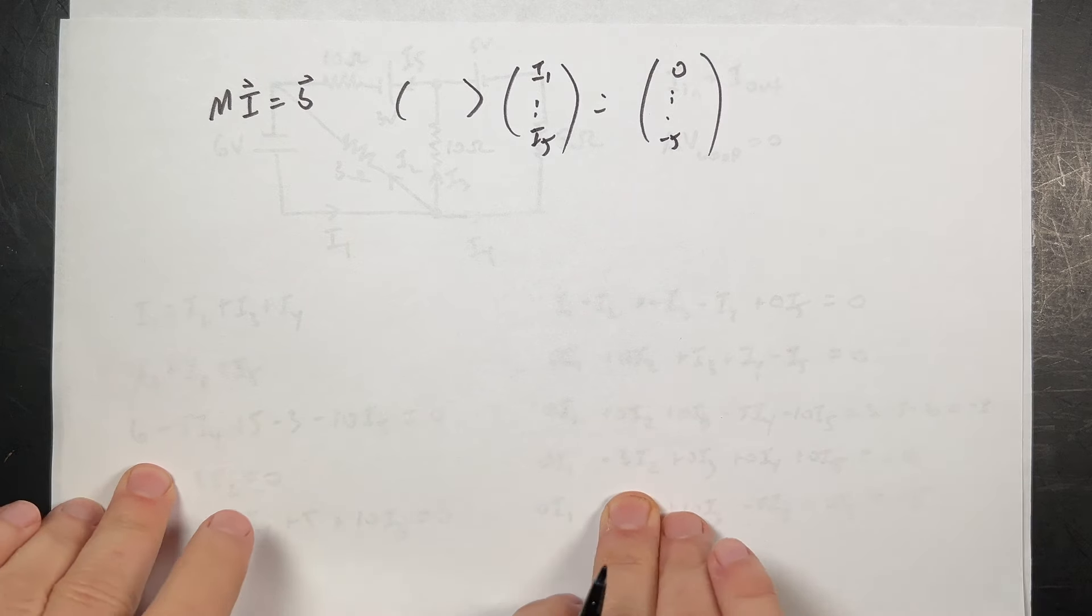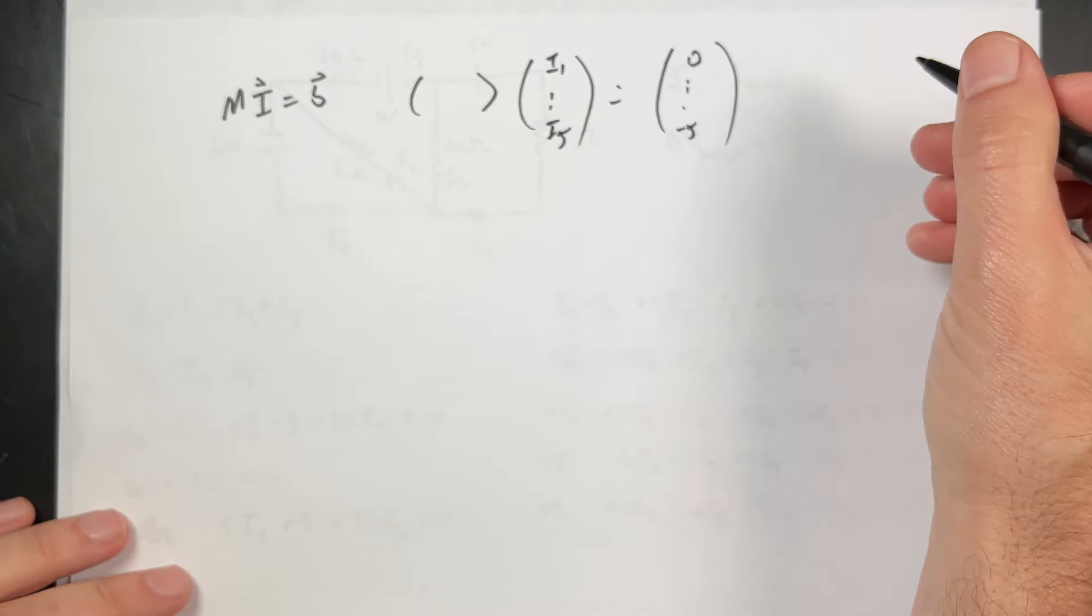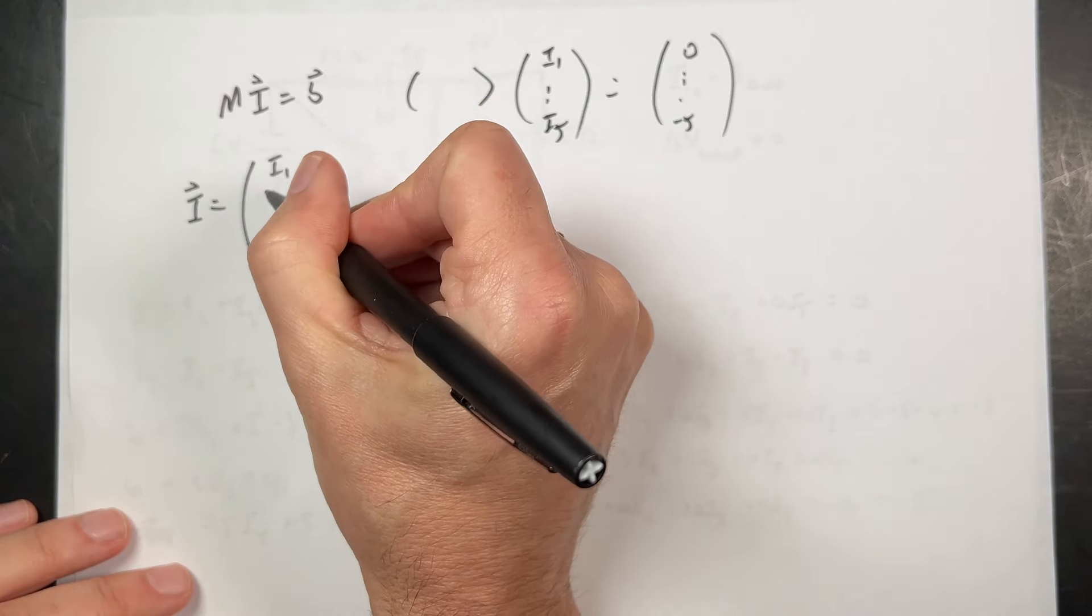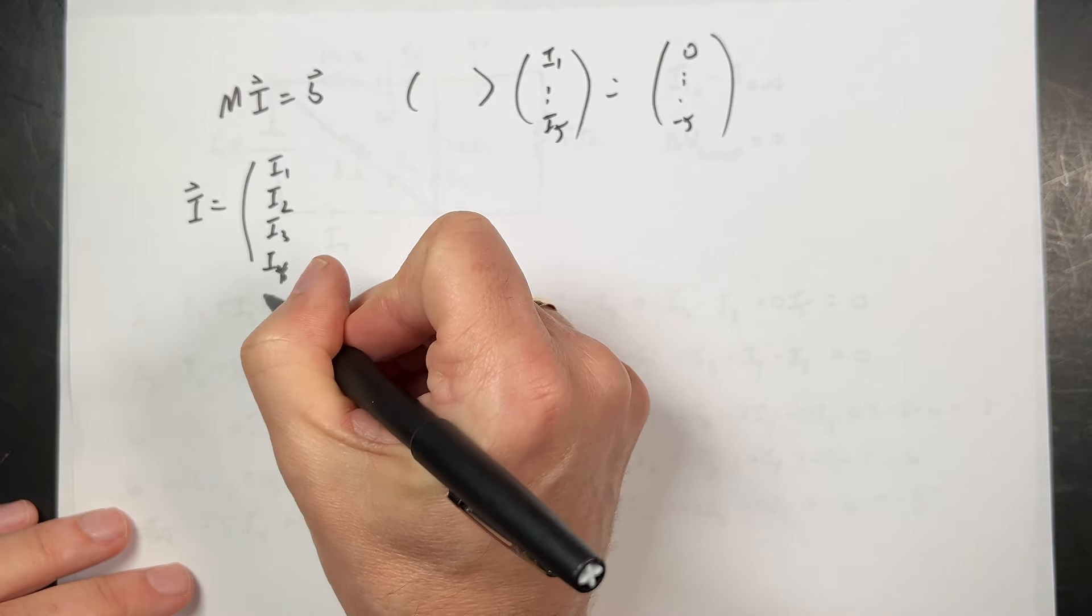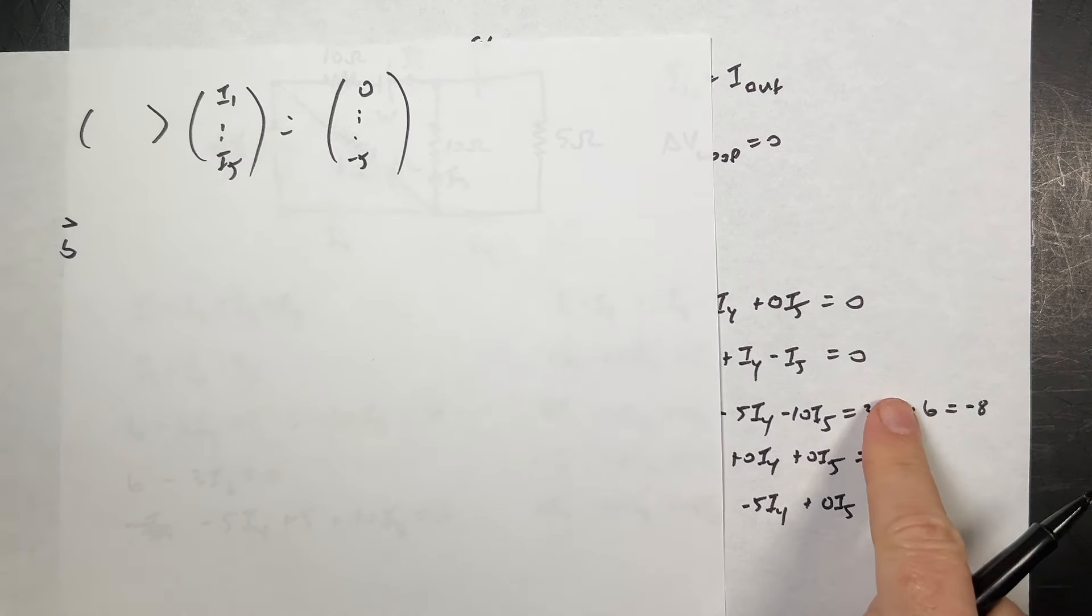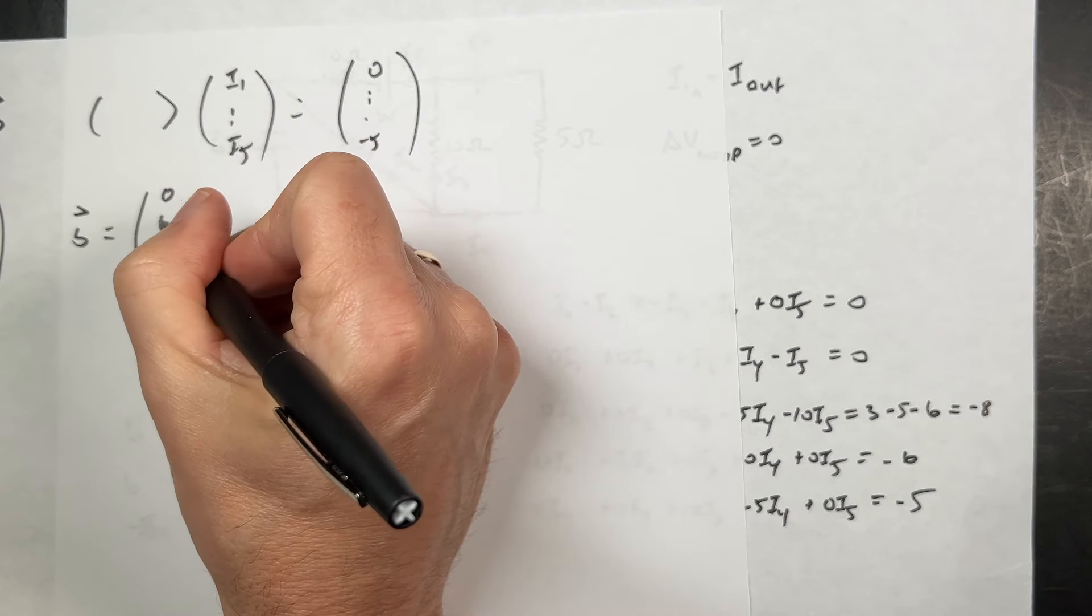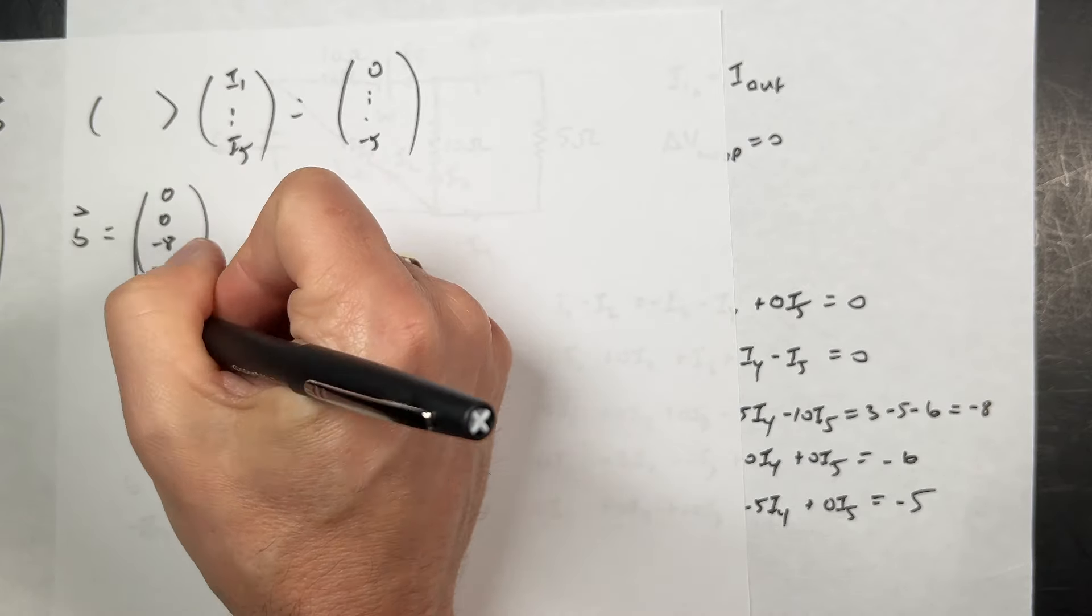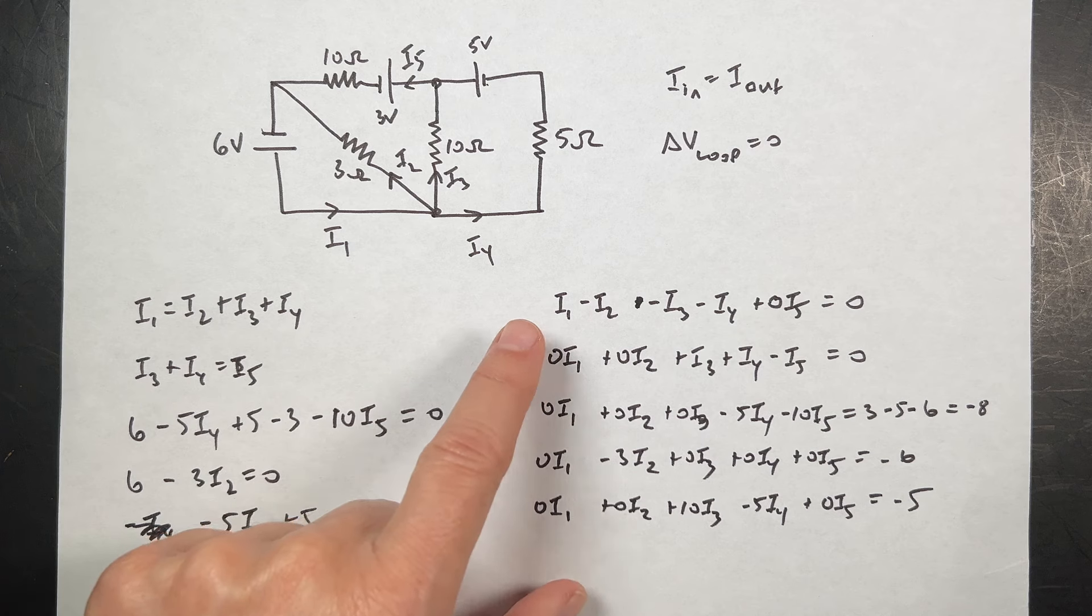There are some rules about whether it should be a column vector or a row vector, and we don't really care. I don't really care, maybe you care. So I can say the vector I is equal to I1, I2, I3, I4, I5. The vector B is equal to this, so it's equal to zero, zero, negative eight, negative six, negative five.